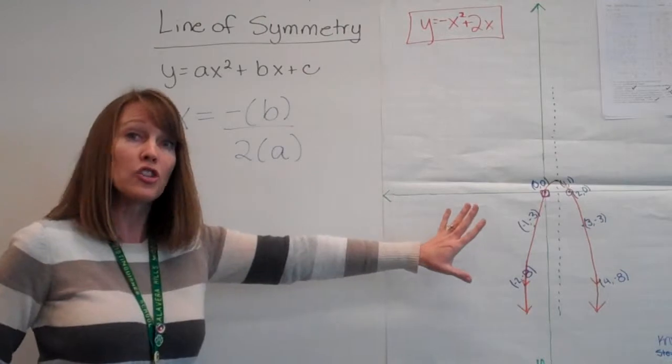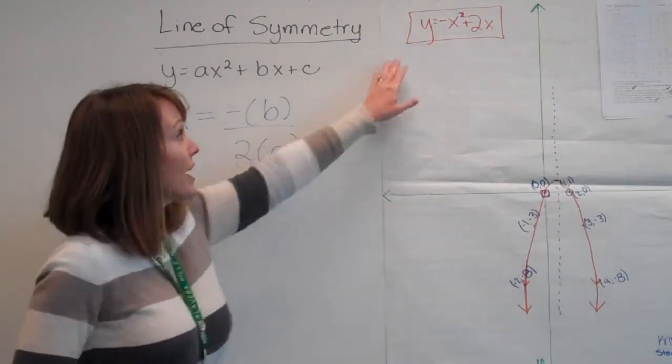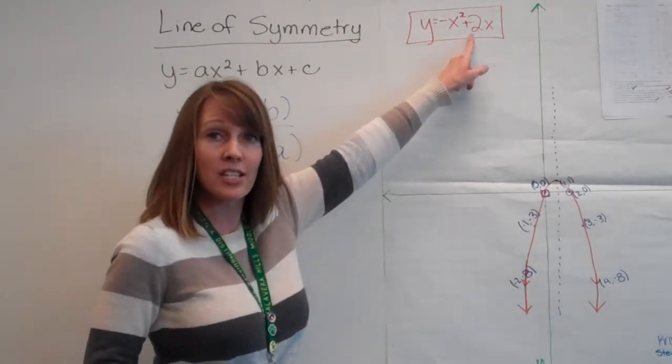So let's take this graph, we already know the equation, we can already see it, but let's see if it works out. So here's my equation, y equals negative x squared plus 2x.